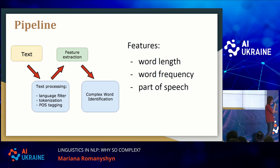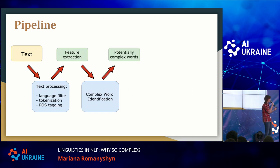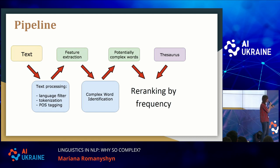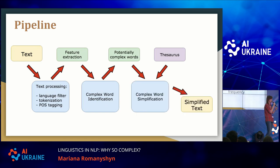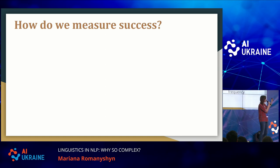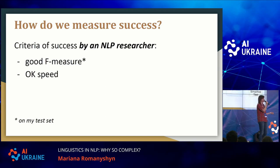Then we can do our complex word identification module — maybe train a classifier. In the shared task of 2018, the winning system was using simply logistic regression for classification of a word being complex or non-complex. We can find potentially complex words that way. Then we take a thesaurus — a dictionary of synonyms — extract synonyms for the complex word, rank these synonyms by frequency, and we have a result: simplified text with the most frequent synonym put back.